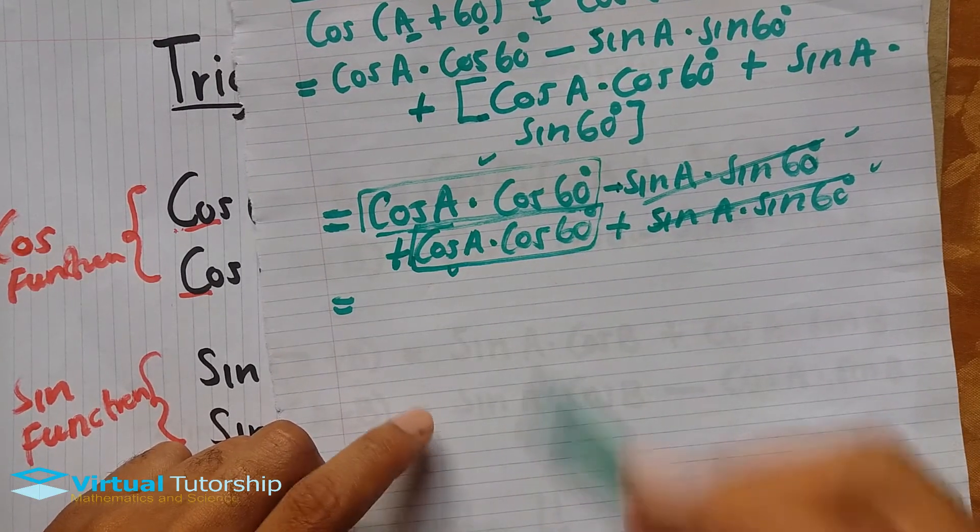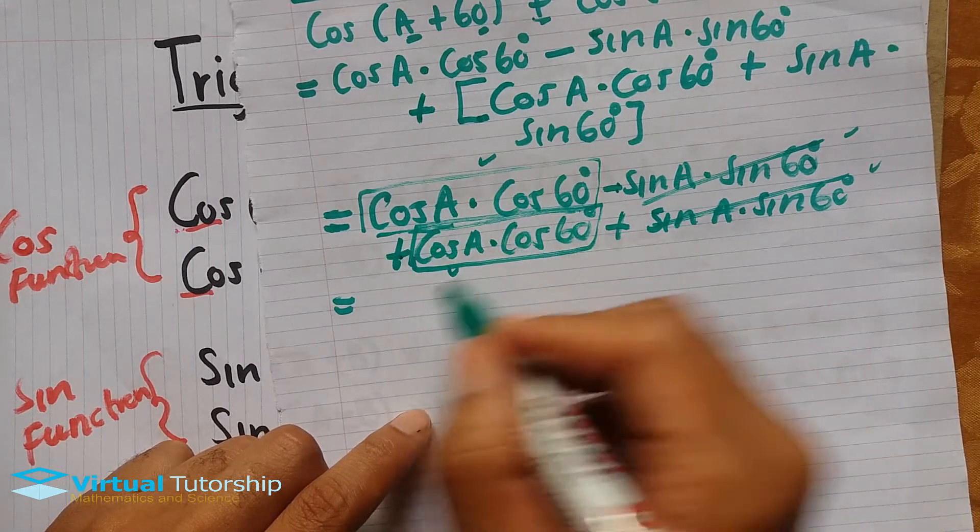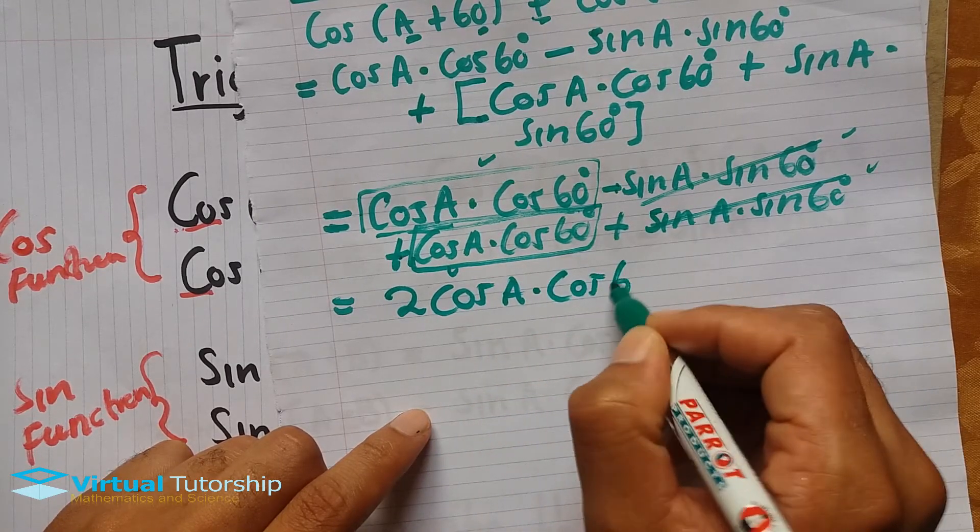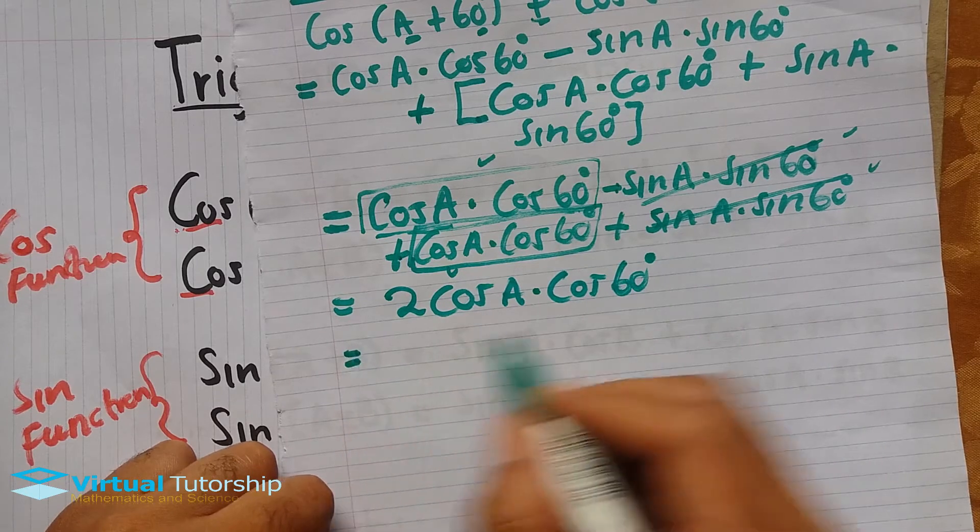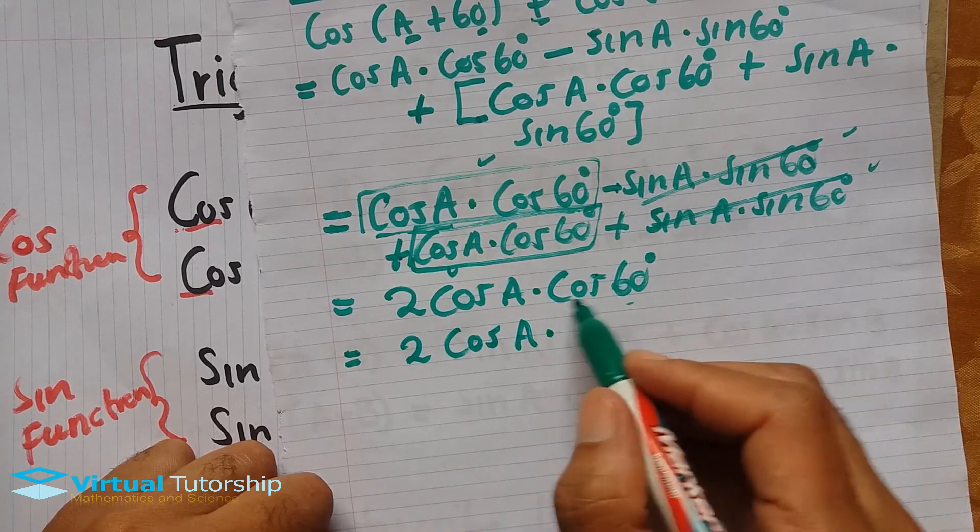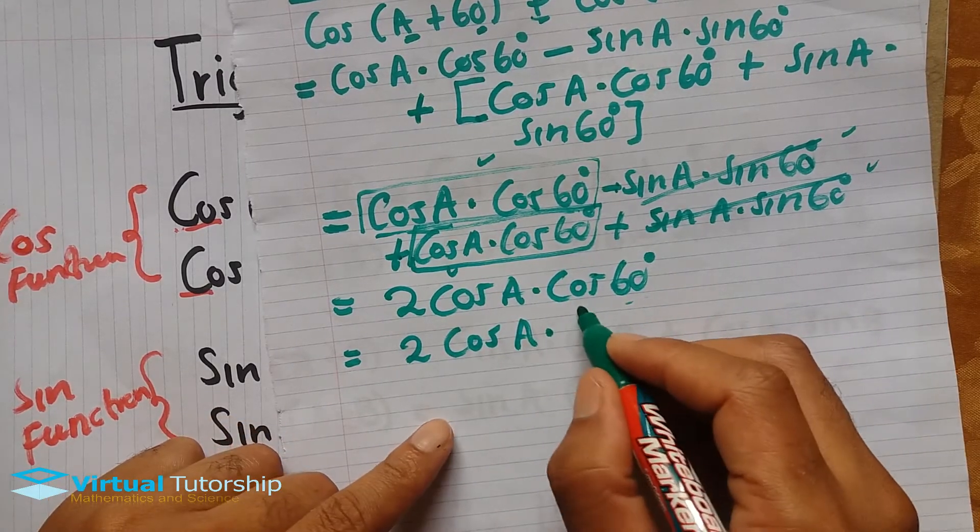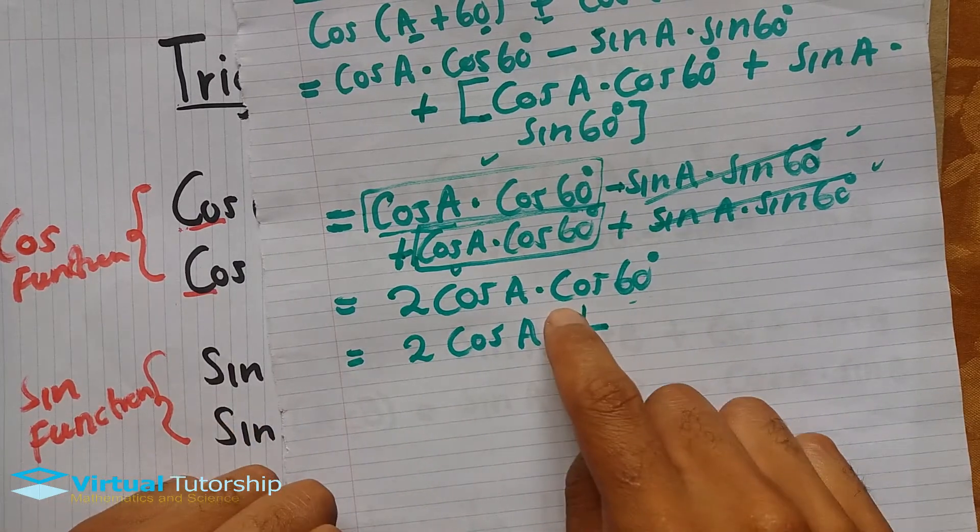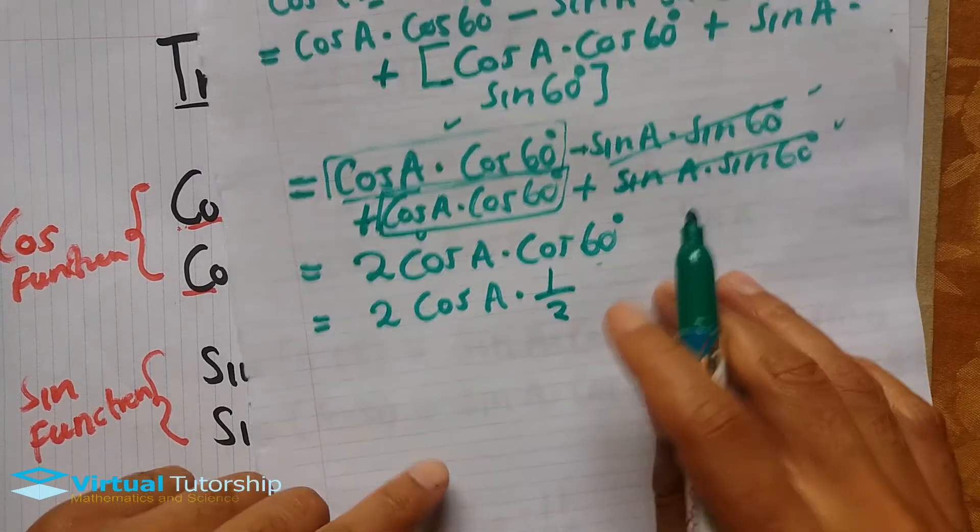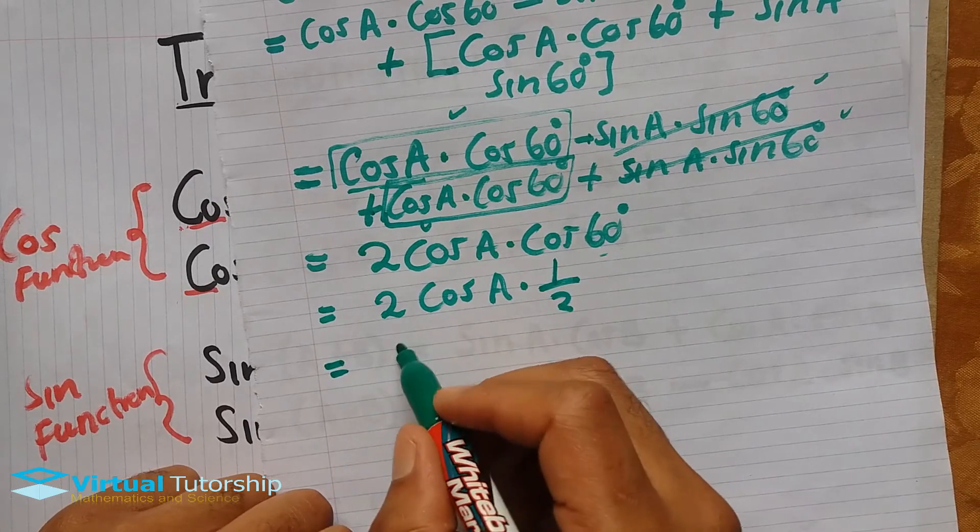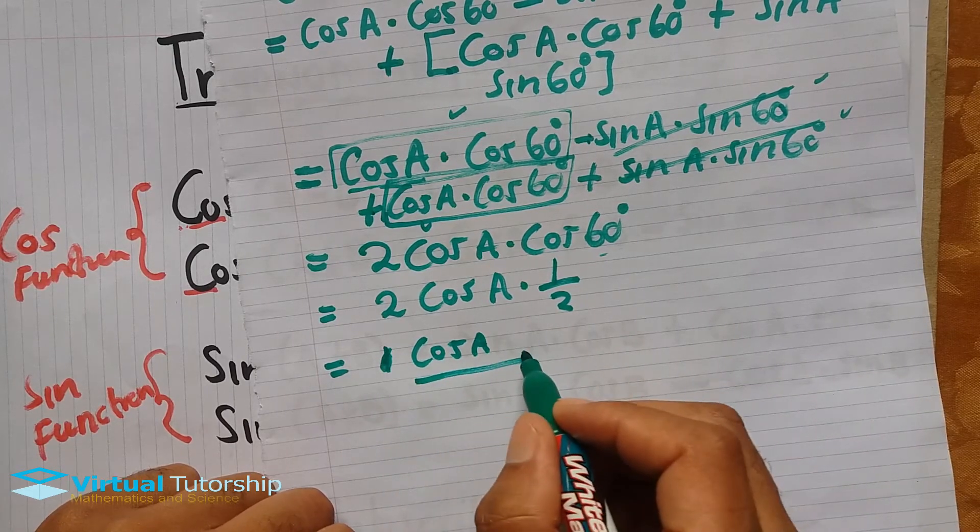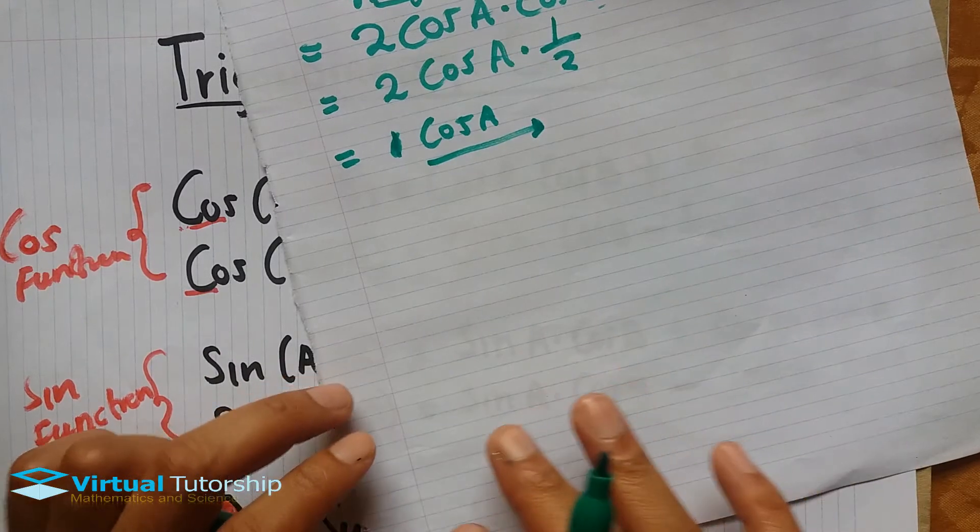But 60 degrees is a special angle, so cos(60°) equals a half. Whenever we have a cosine function with a special angle, we convert it. So a half times two equals one, giving us cos(A). The answer is cos(A).